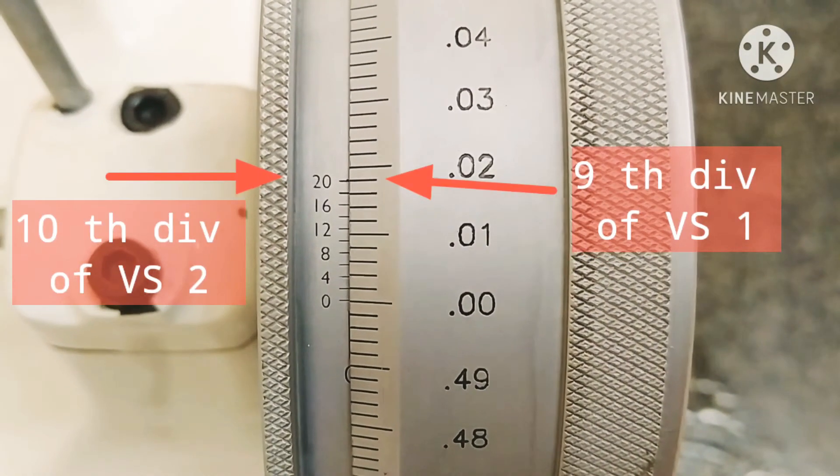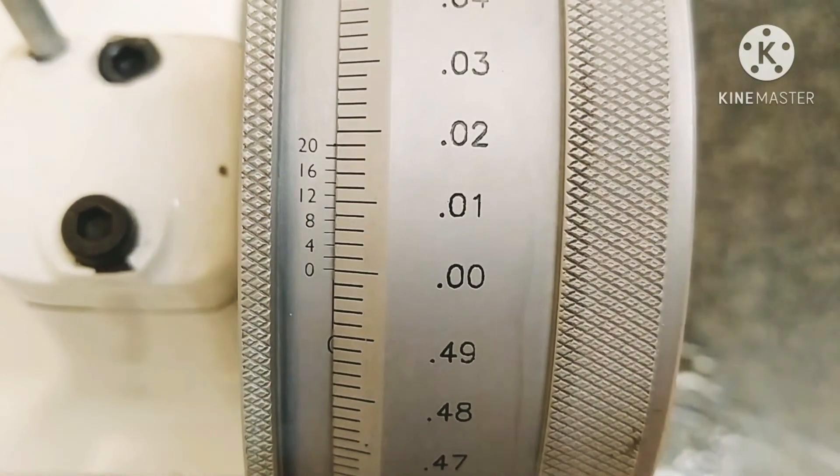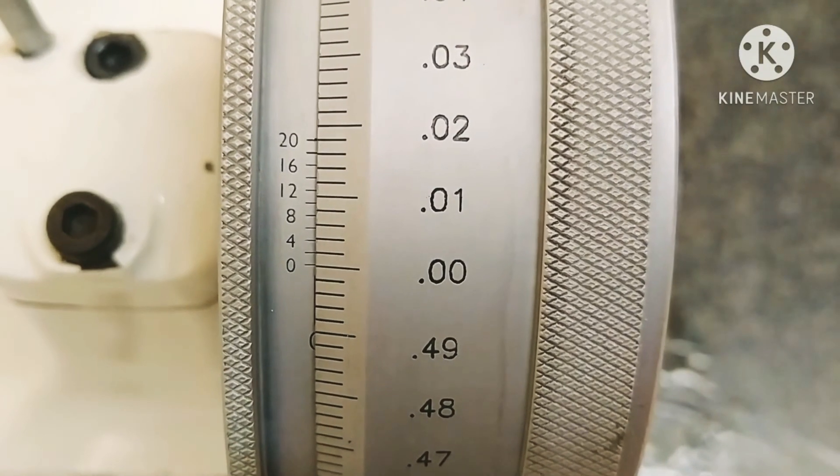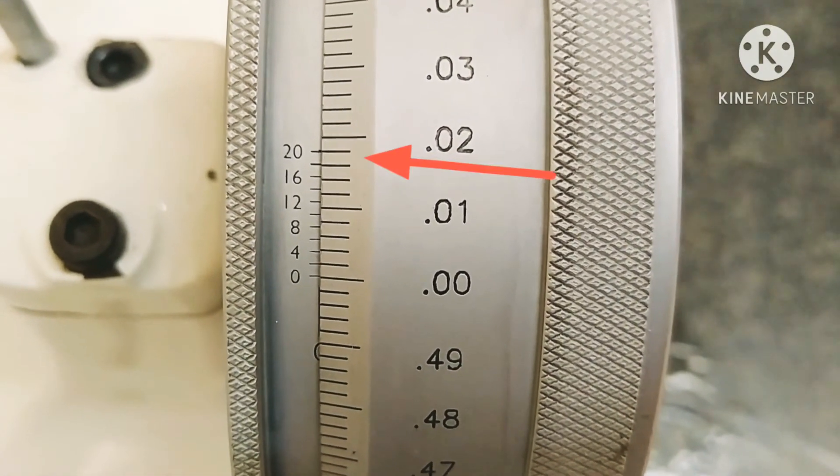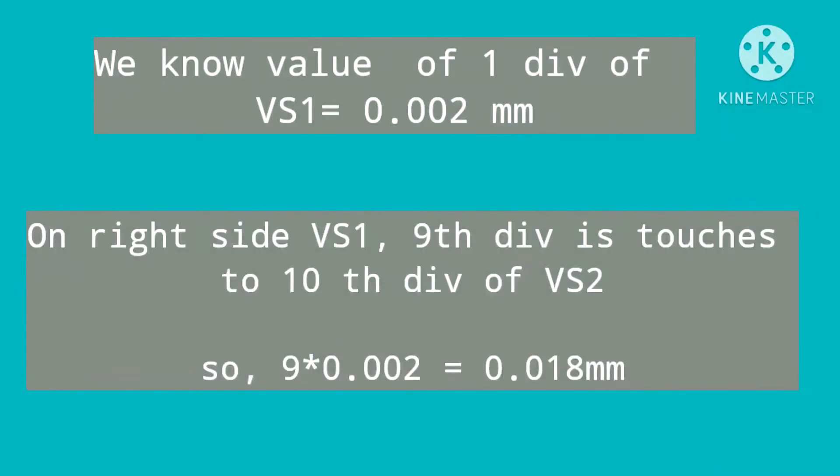On vernier scale 2, the 9th division of vernier scale 1 perfectly touches the 10th division of vernier scale 2. We know the value of one division of vernier scale 1 is 0.002, so 9 times 0.002 becomes 0.018.